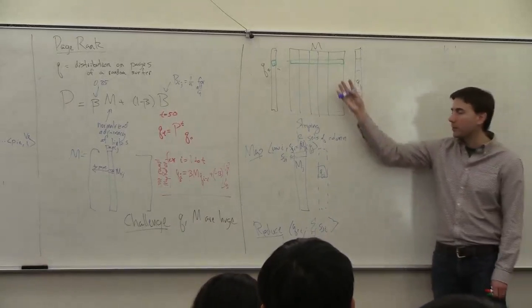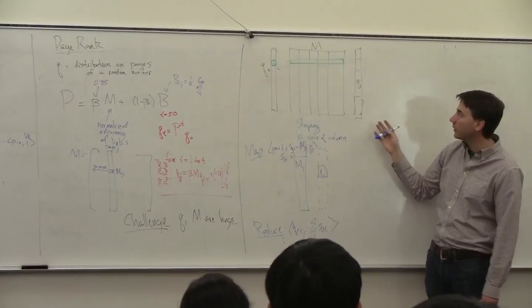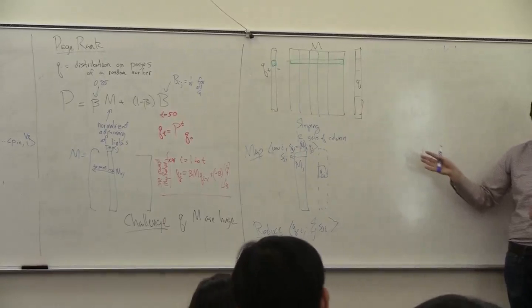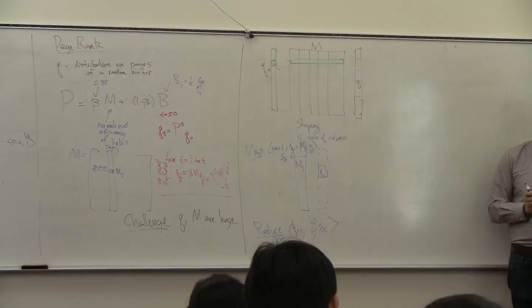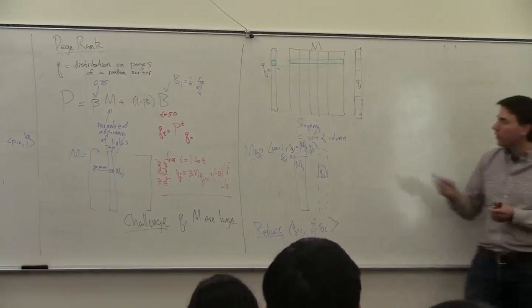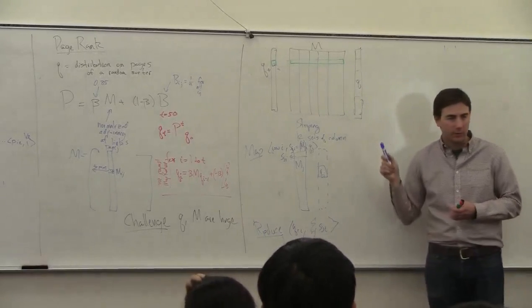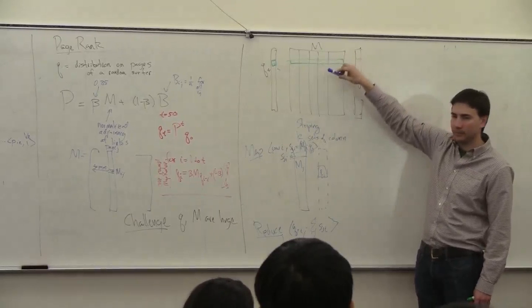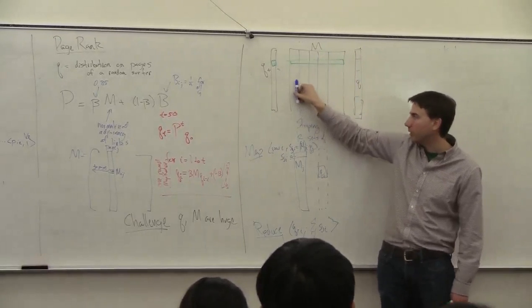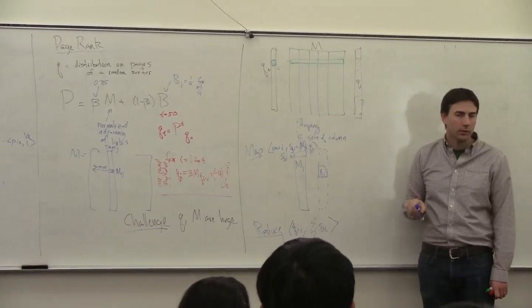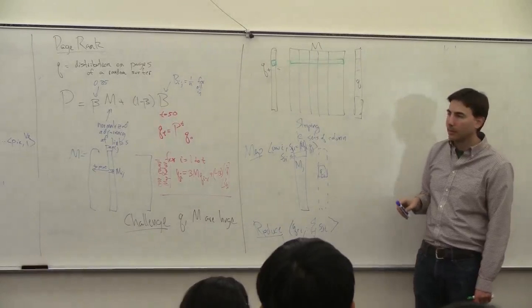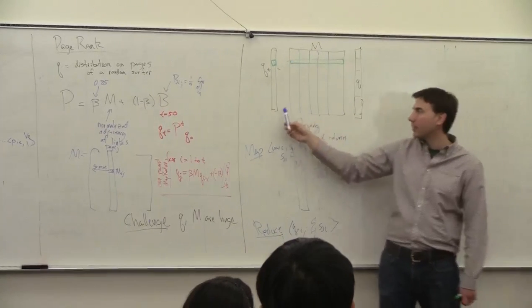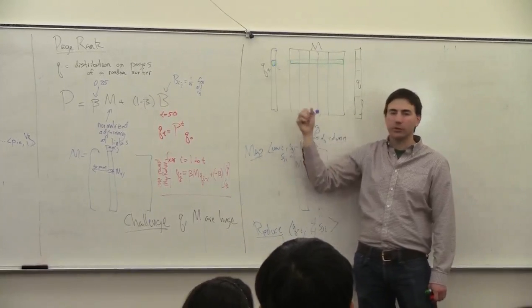So if you stripe up this matrix, then you can output this. Does this at least make sense how this works? So what are the possible problems with this? How big is the output of one of these stripes? I'm going to output something for every row here, for every web page. So each of the stripes is outputting an element of Q plus, which I'm going to need to add up.